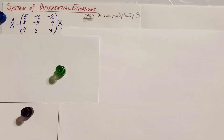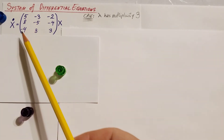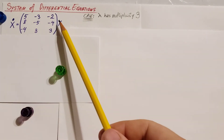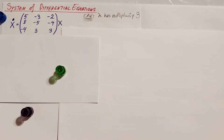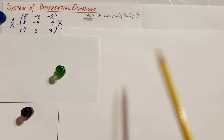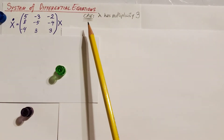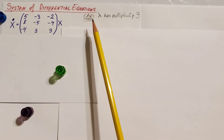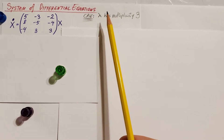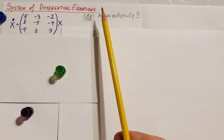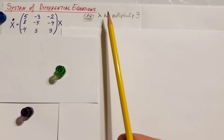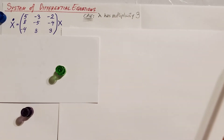Here we are dealing with a system of differential equations. This is a first order linear setup. We have x dot, we have a matrix, multiplied by x on the end. Just a little heads up — this will be the case where we're going to be trying to find eigenvalues and we're going to end up finding three that are exactly the same. Therefore, we're going to have a multiplicity of three.